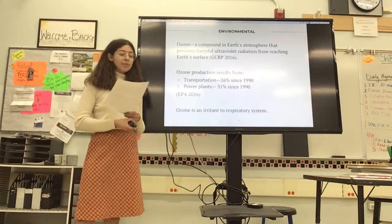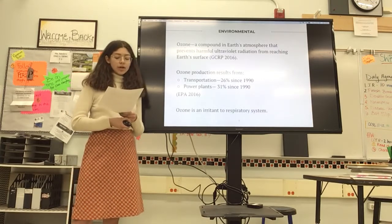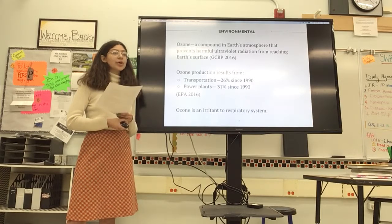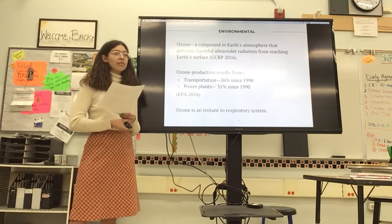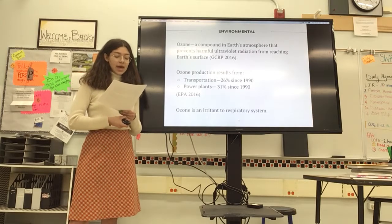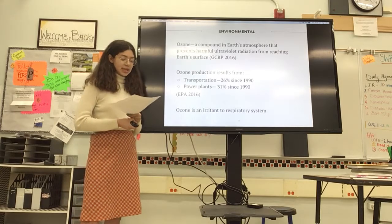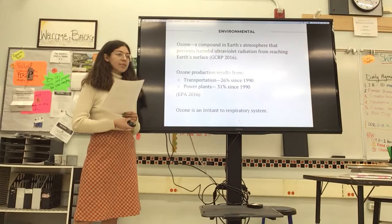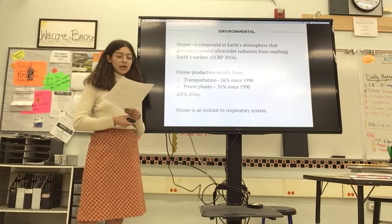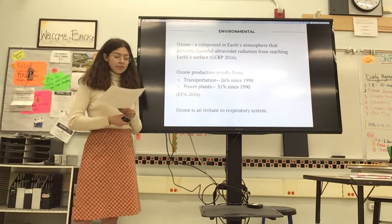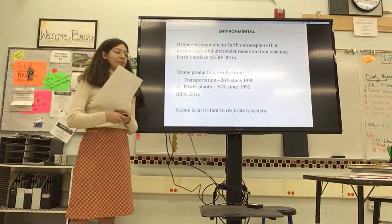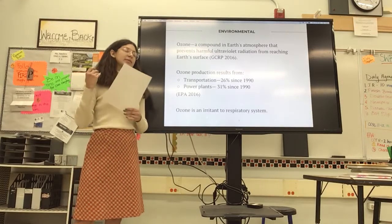Ozone, according to the Global Climate Research Program, or the GCRP, is a compound usually found in the Earth's atmosphere that prevents harmful ultraviolet rays from reaching the Earth's surface. Ozone production is not only a result of vegetation and wildfires, but of motor vehicle transportation and power generation. The EPA, or the Environmental Protection Agency, says that motor vehicle transportation accounts for 26% of emissions since 1990, and power generation accounts for 31% since the same year. The GCRP says that current levels of ground ozone have been estimated to be responsible for many cases of respiratory irritants near the Earth's surface.